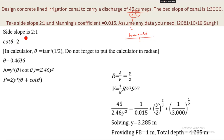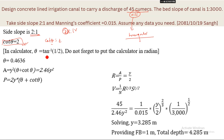For the triangular section, side slope 2:1 means cot θ = 2, since Z horizontal to 1 vertical gives cot θ = Z = 2. To find θ, convert to tan inverse in the calculator — and remember to keep the calculator in radian mode, otherwise the answer will be in degrees and will be wrong. θ = 0.4636 radians.